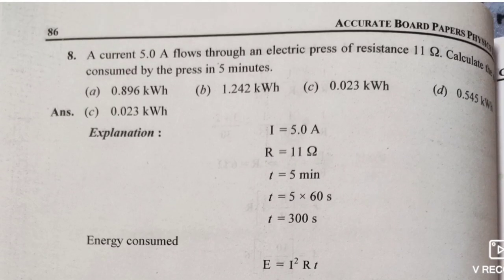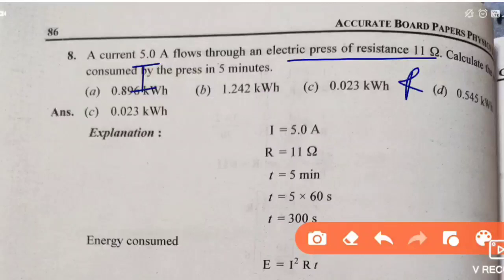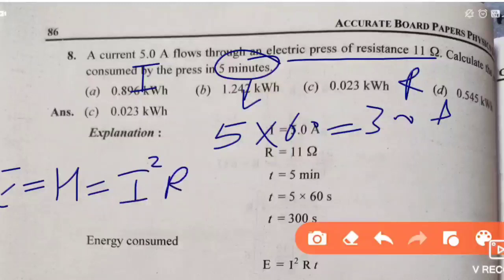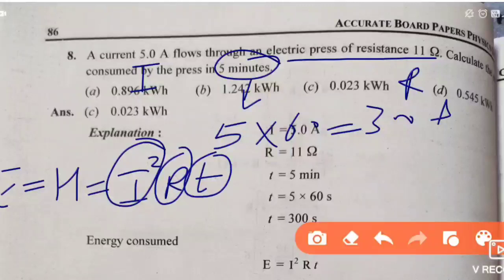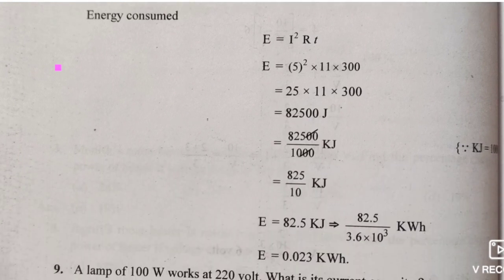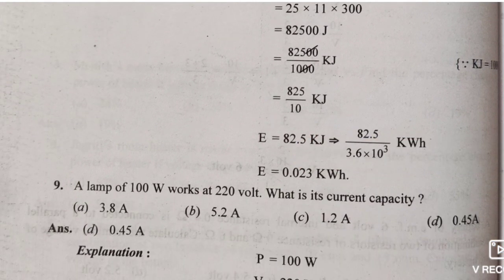Question 8: A current of 5 ampere flows through an electric resistor of 11 ohm. Current I is given, resistance R is given. Calculate the energy consumed in 5 minutes. Convert 5 minutes to 300 seconds. Use formula H = I²Rt. Put all values; convert answer from joules to kilojoules by dividing by 1000.